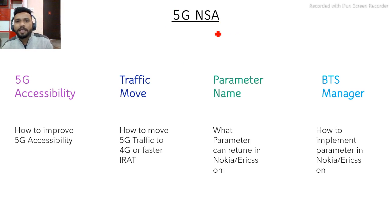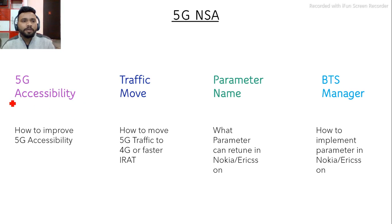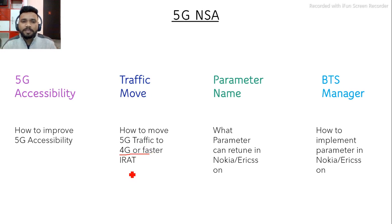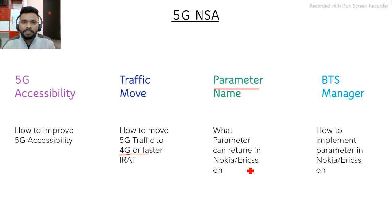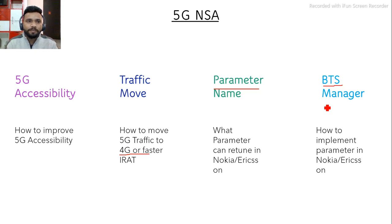Accessibility is the KPI and NSA means non-standalone, where we are using the core network of 4G. In this video I will discuss how we can improve the 5G NSA Accessibility KPI, how we can move 5G traffic to 4G — or do faster IRAT — and which parameters we can tune in Nokia and Ericsson. I will also show how to change those parameters in Nokia Web Element Manager and in Ericsson.